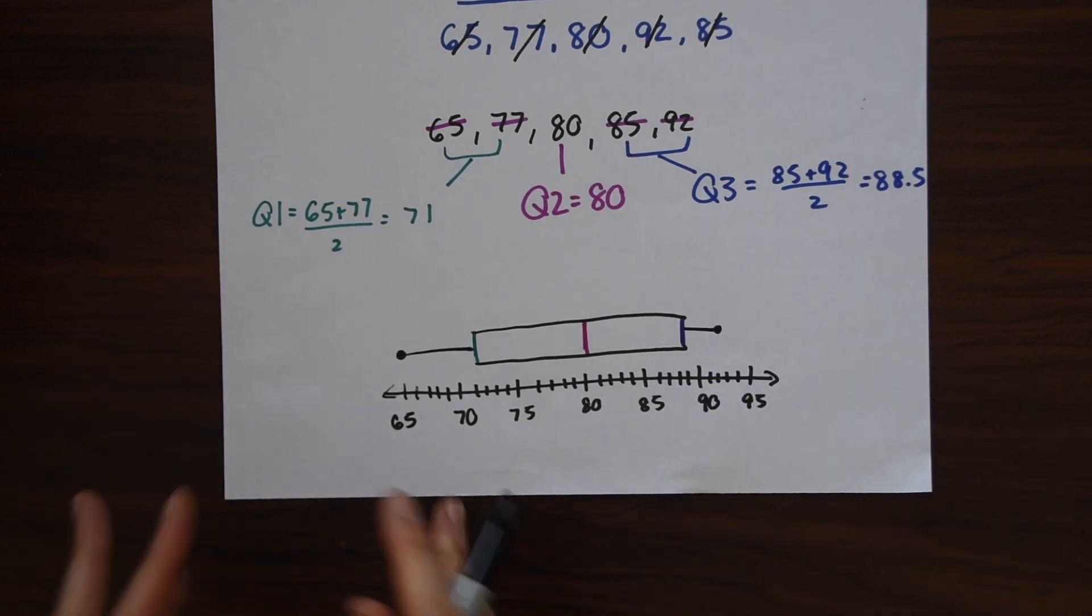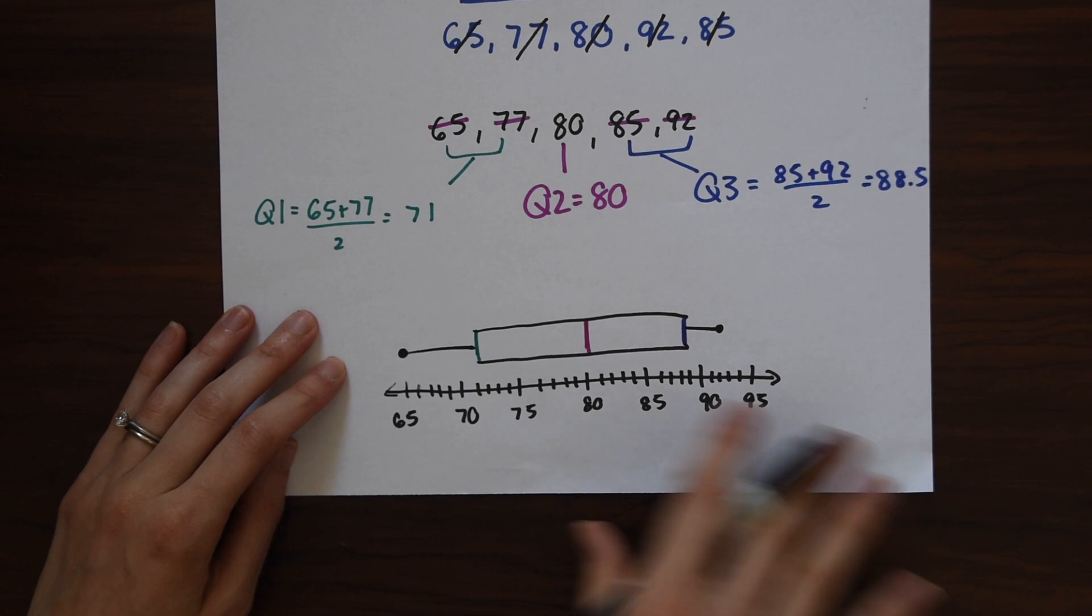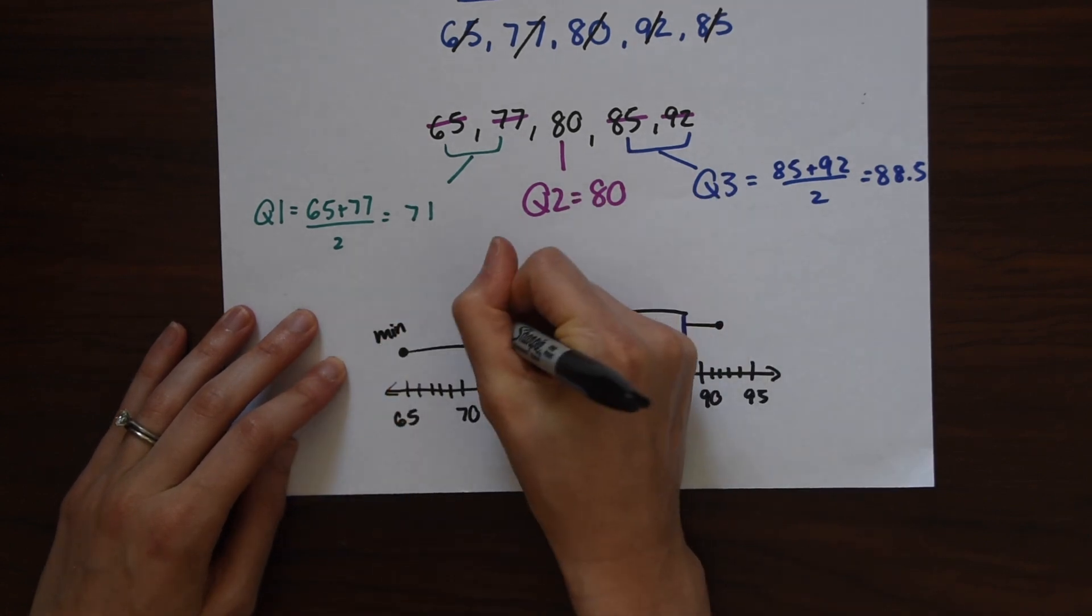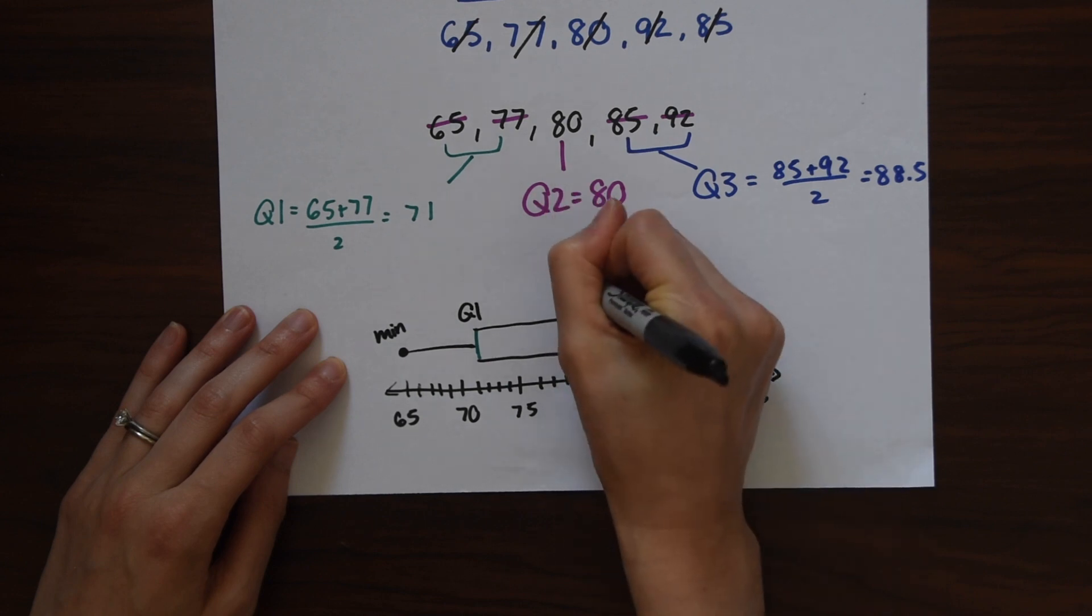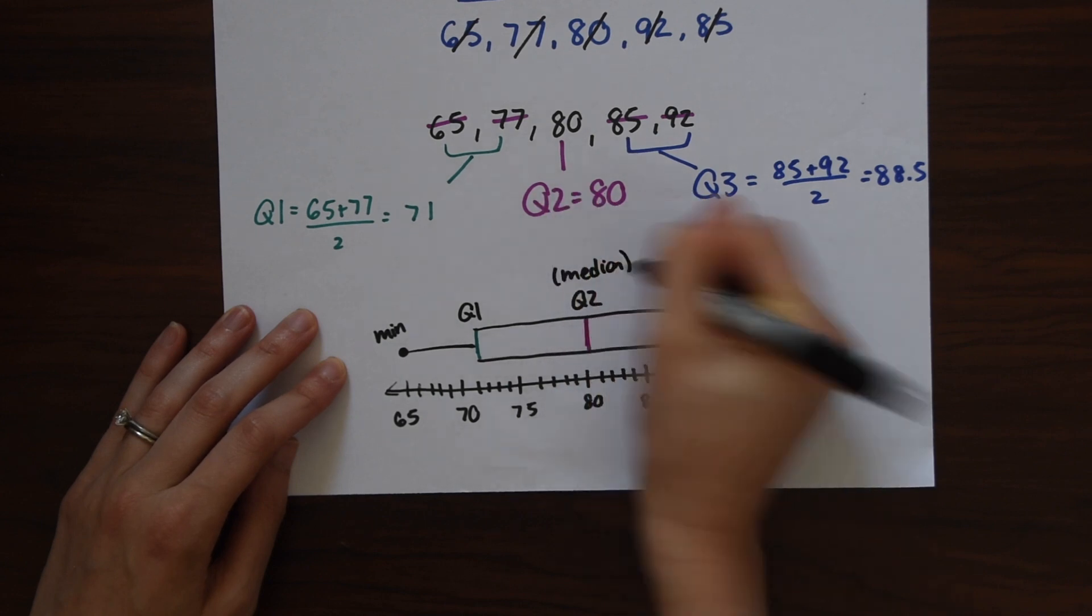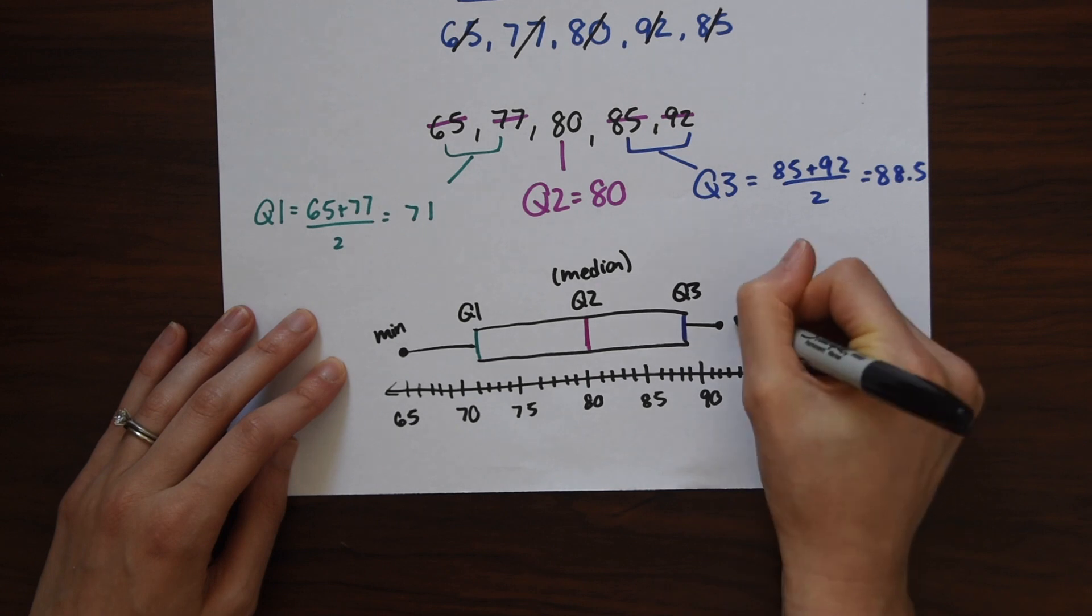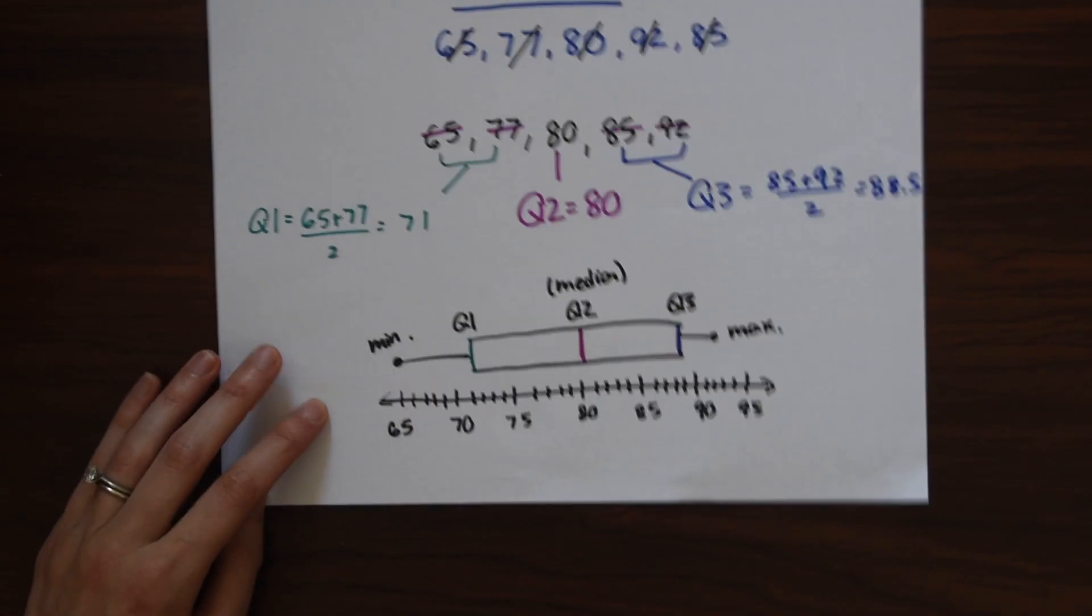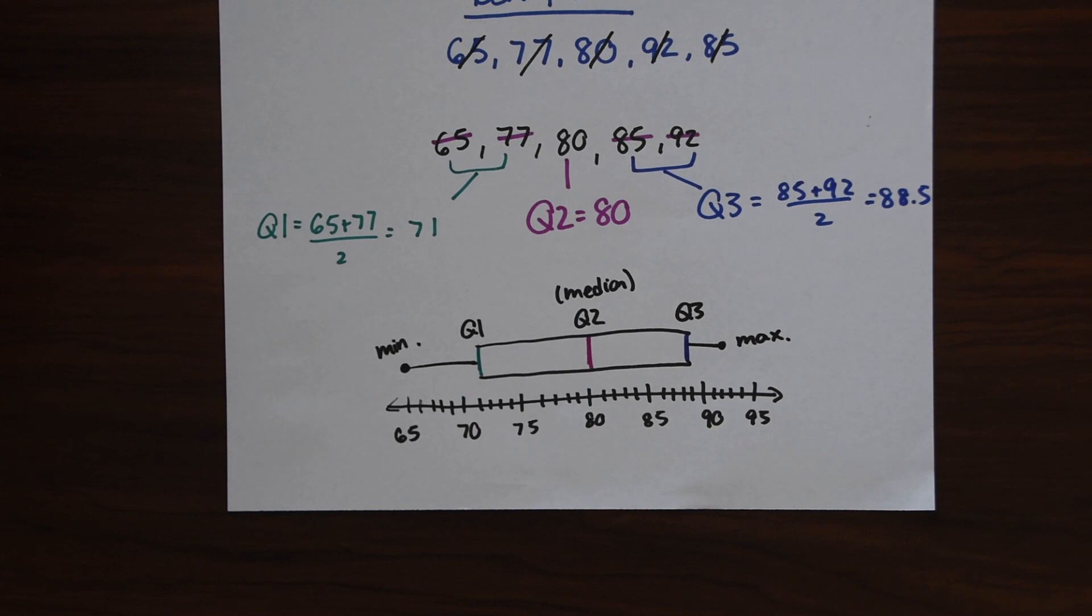So just to remind you where all these numbers represent, this is the minimum, quartile 1, quartile 2 which is also the median, quartile 3, and the maximum. So sometimes box plots are even called the five number summary because notice you need five numbers to make it: the minimum, the three quartiles, and the maximum. So that's really it for our box plots.